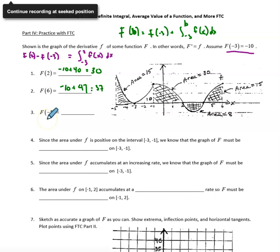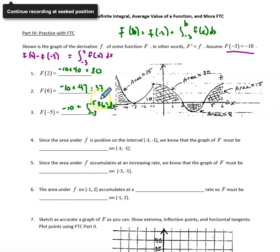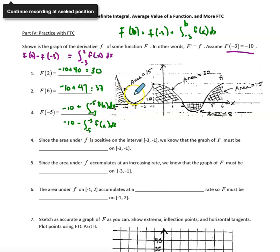For big F of negative 5, I start with big F of negative 3, which is negative 10, and add the integral from negative 3 to negative 5 of little f. The reason I wrote this out is to show that I'm actually in the wrong order. Whatever integral I get from negative 3 to negative 5, I need to negate it, so I have negative 10 minus the integral from negative 5 to negative 3. That integral is 15, so negative 10 minus 15 gives me negative 25.